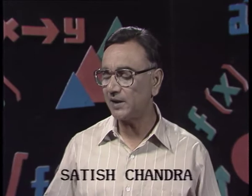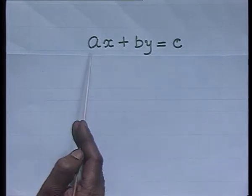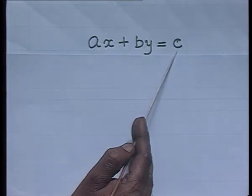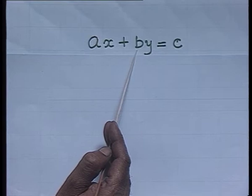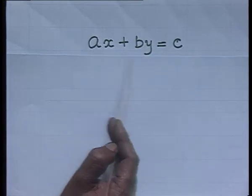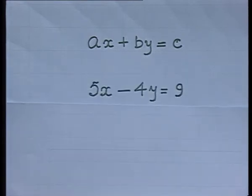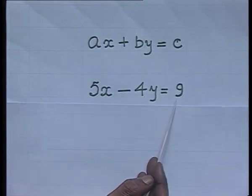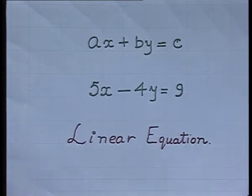An equation of the type Ax plus By equals C is a linear equation. Here, A, B and C are all constants, but A and B both together cannot be equal to 0, and the variables are x and y. If I give a particular value to A and particular value to B, I get an equation 5x minus 4y equals 9, and this is nothing else but a linear equation in x and y.